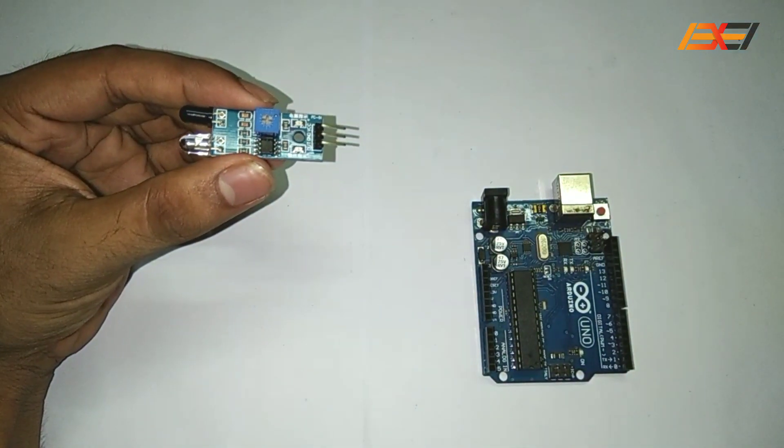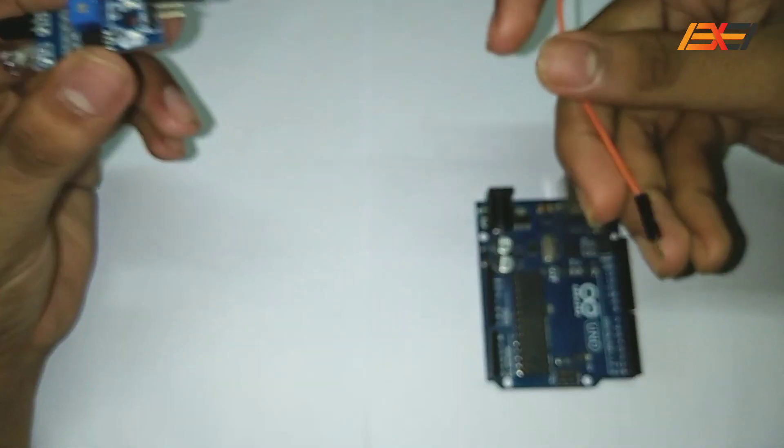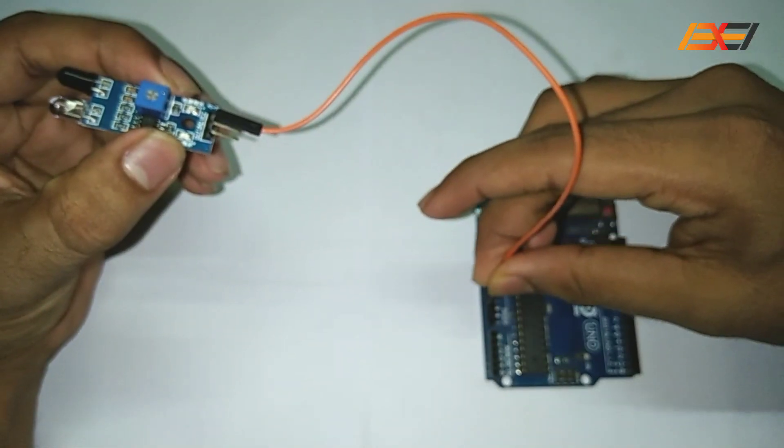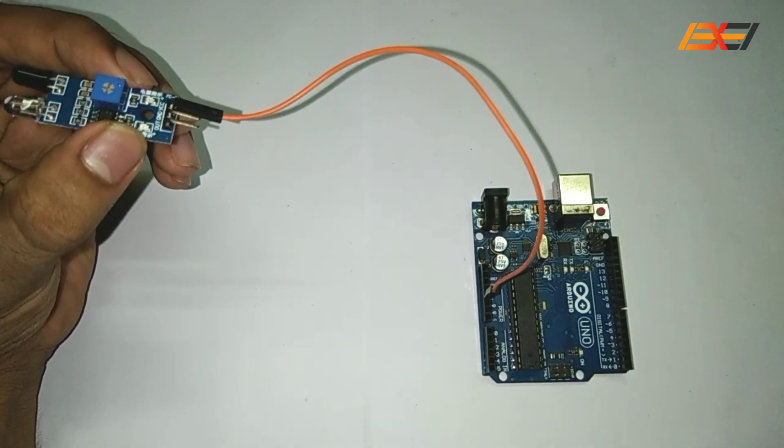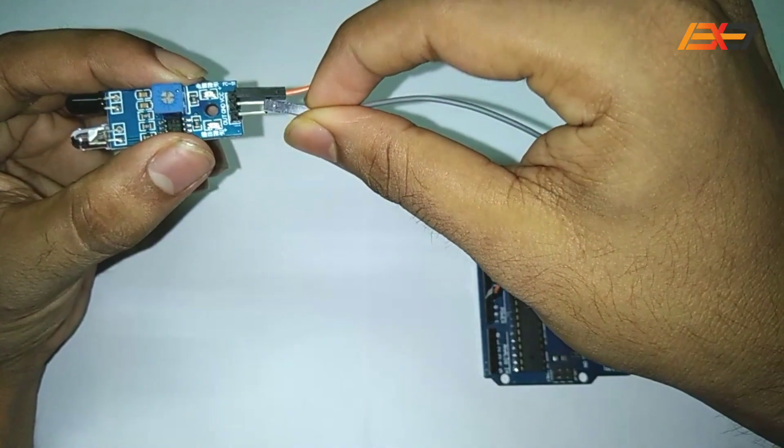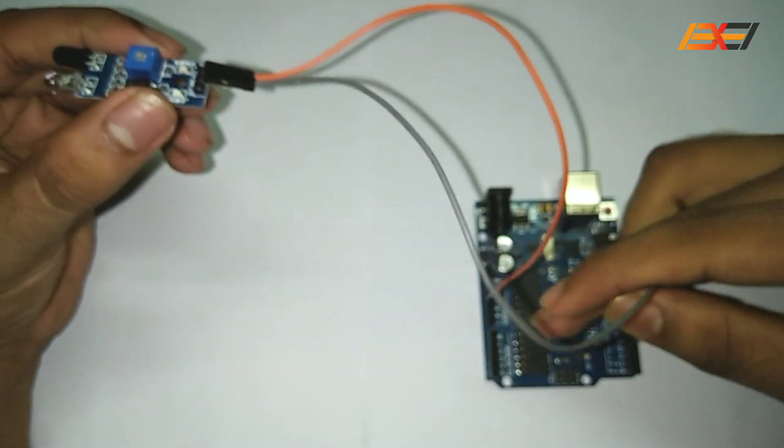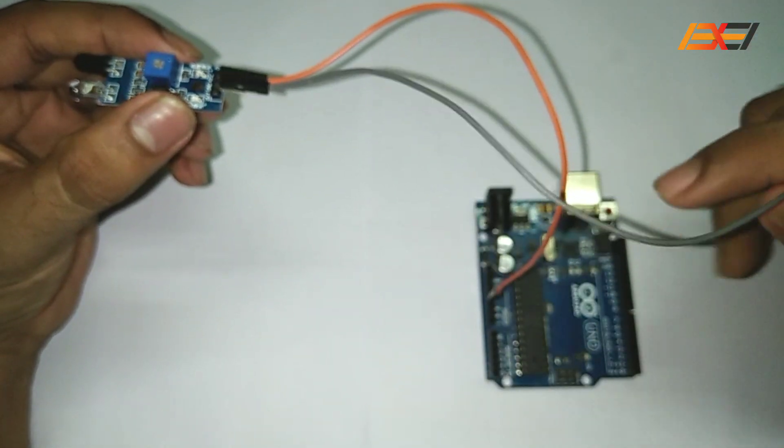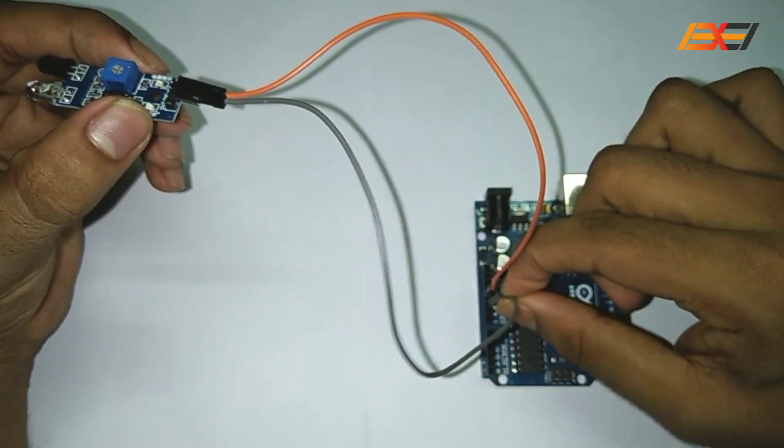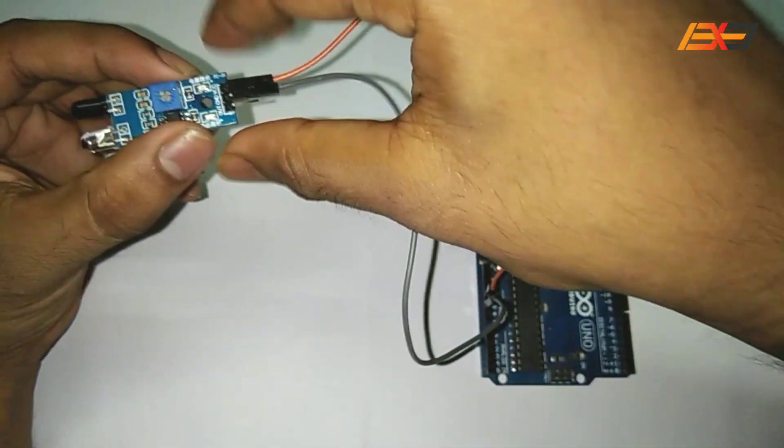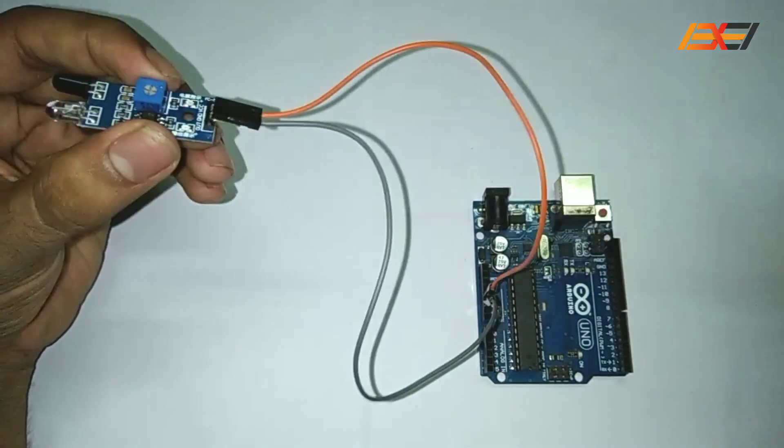First we need to connect the VCC pin of IR sensor to 5V of the Arduino UNO board. The ground pin of the IR sensor, there are three ground pins available in this Arduino UNO board, so the ground pin of IR sensor has been grounded.